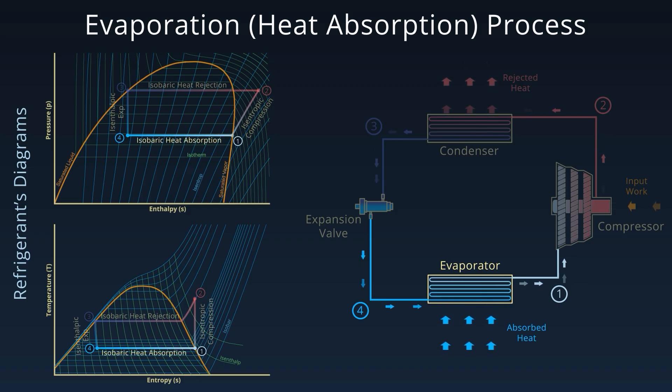This is another isobaric process, but this time it's heat absorption. The liquid completely vaporizes, and by point 1, we are back to low pressure vapor ready to start the cycle again.